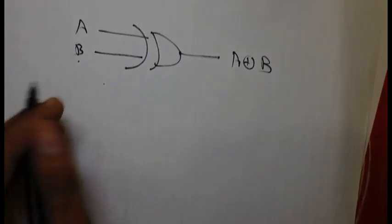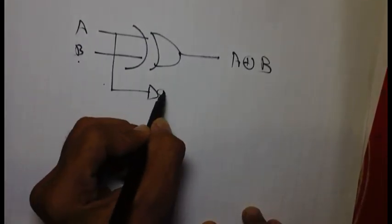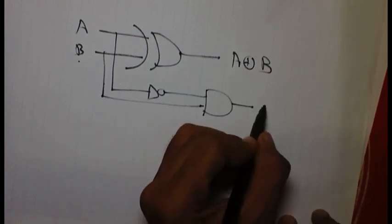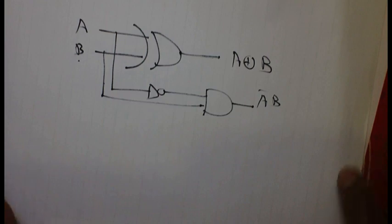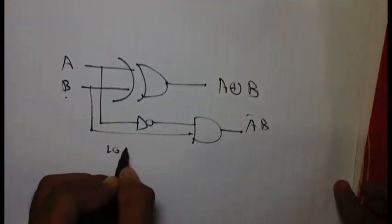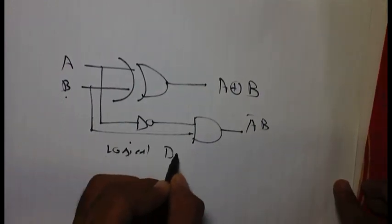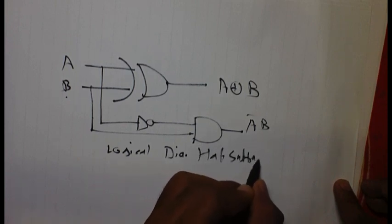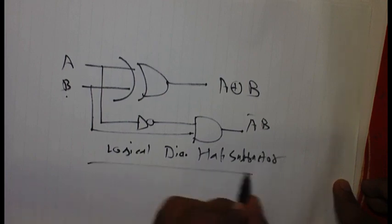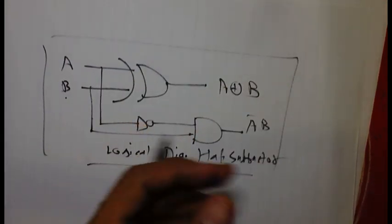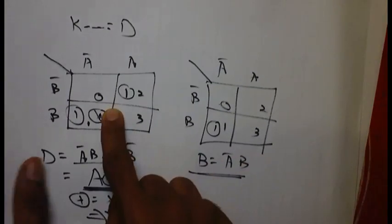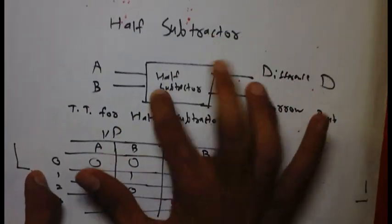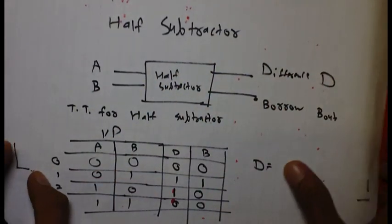And now for A bar B, A bar means A inverted and B directly, AND gate to them. It will be A bar B. So this is the logical diagram of half subtractor. This is K-map of half subtractor, and this is truth table of the half subtractor, and this is the block diagram, simple block diagram of half subtractor.